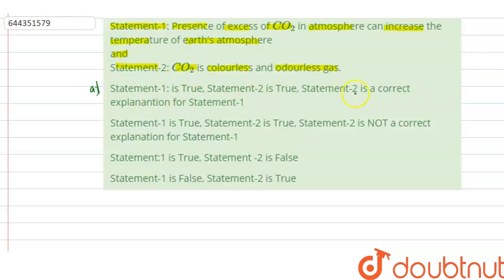Option A: Statement 1 is true, Statement 2 is true, Statement 2 is a correct explanation for Statement 1. Option B: Statement 1 is true, Statement 2 is true, Statement 2 is not the correct explanation for Statement 1. Option C: Statement 1 is true, Statement 2 is false. Option D: Statement 1 is false and Statement 2 is true.